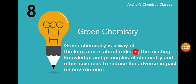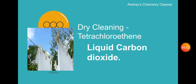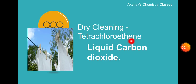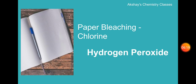Topic nine: green chemistry. Green chemistry is a way of thinking and is about utilizing existing knowledge and principles of chemistry and other sciences to reduce the adverse impact on the environment — it is a way to save nature. For example, in dry cleaning, the chemical tetrachloroethylene is a carcinogen; green chemistry suggests replacing it with liquid carbon dioxide. Another example replaces chloroethylene with hydrogen peroxide.